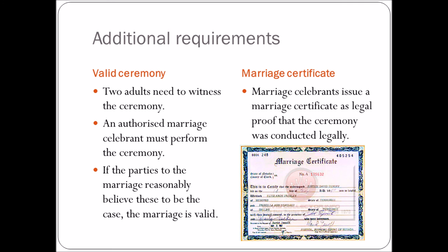Next, there needs to be a valid ceremony — two adults need to witness it. If you've ever been to a wedding, you'll see that after the ceremony the couple signs something, and then two witnesses also sign. An authorised marriage celebrant must perform the ceremony, notified 30 days beforehand. Importantly, if the parties reasonably believed the celebrant was authorised or that witnesses were adults, the marriage is still valid even if that wasn't strictly the case.